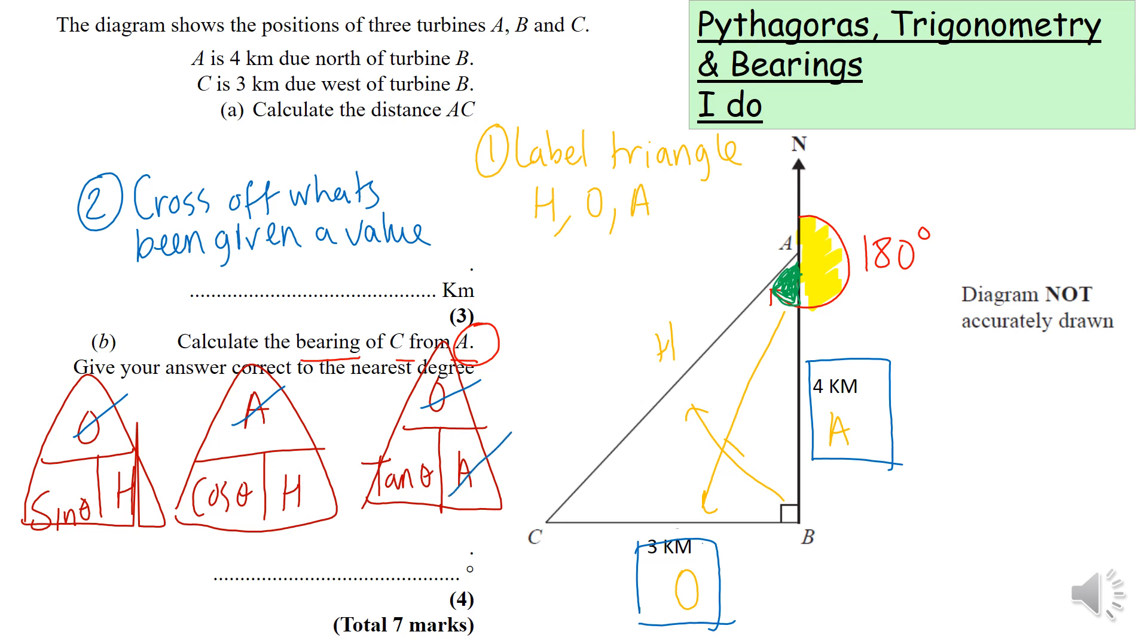Step three: cross off what you need. In this case, we're working out that angle there. Whenever you're working out the angle or the angle's being given, you can cross them three off: sine theta, cos theta, and tan theta.